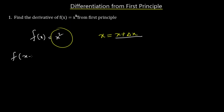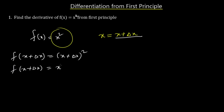So I have f(x + dx) = (x + dx)². Simplifying this expression, I open the brackets to get x² + 2x·dx + dx². This is the first stage — I've replaced all values of x with x + dx and expanded the bracket to get x² + 2x·dx + dx².